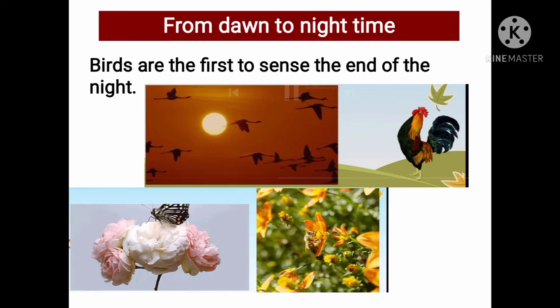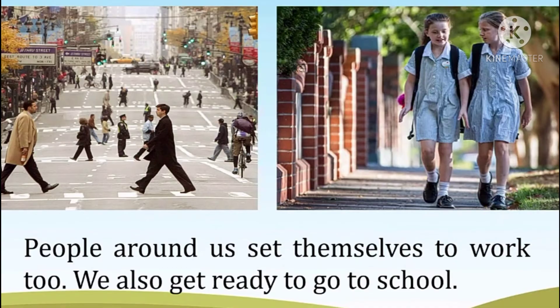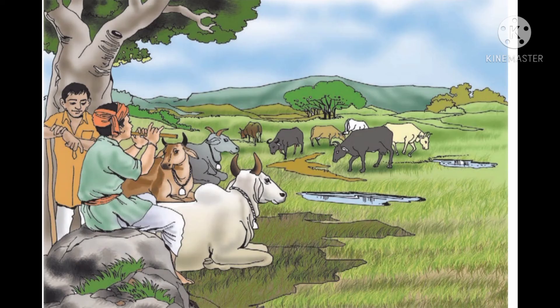From dawn to night time: Birds are the first to sense the end of the night. Their chirping begins from early dawn. If there is a rooster nearby, you can hear it crow. The birds leave their nests and start flying in flocks, beginning to search for food. Flowers too begin to blossom gradually; their petals start unfolding. The flowers have sweet nectar — bees come to collect it. Butterflies, beetles and other insects start hovering around the flowers. People around us set themselves to work, and we also get ready to go to school.